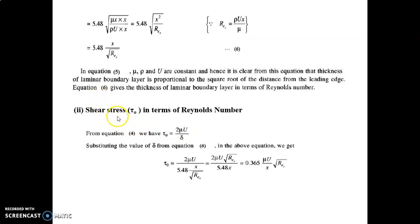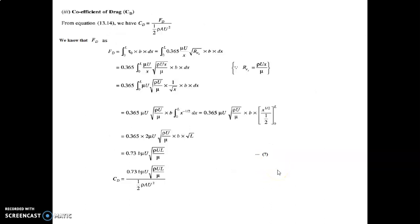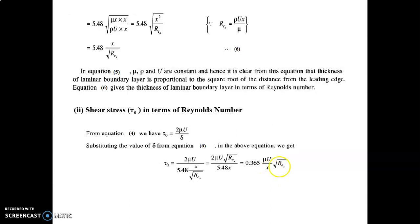Number 2: shear stress τ₀ in terms of Reynolds number. From equation 4, τ₀ = 2μU/δ. Substituting the value of δ from equation 6, we find τ₀ = 0.365 · (μU/x) · √(Re_x), which gives shear stress in the form of Reynolds number.